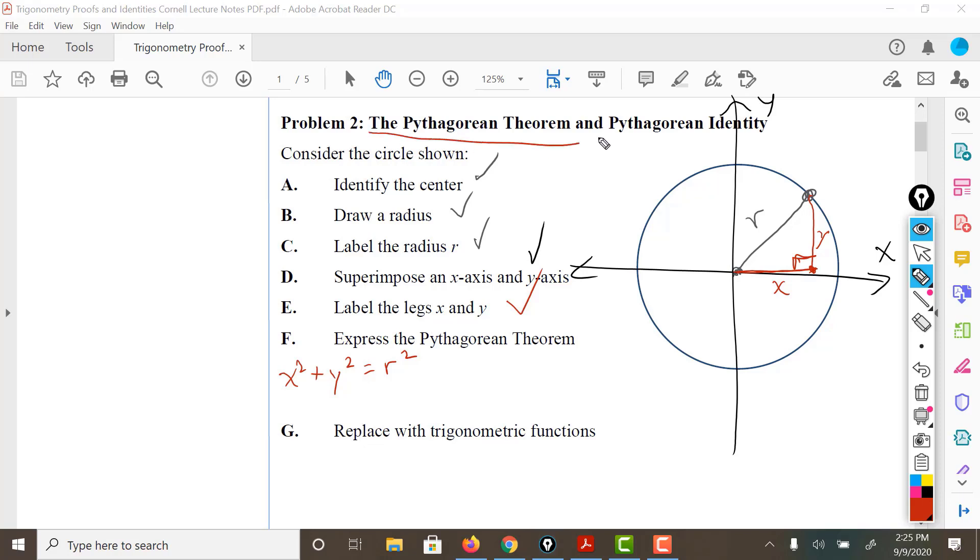So that's the Pythagorean theorem, but we're going to prove the identity right now. So here's what we're going to do. Looking at this triangle right here, let's assume that this angle right here is called theta. Based on this corner, based on angle theta, I can say that sine of theta is going to be the opposite over the hypotenuse. And cosine of theta is going to be the adjacent over the hypotenuse.